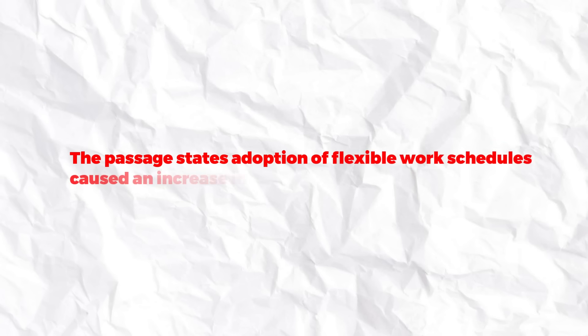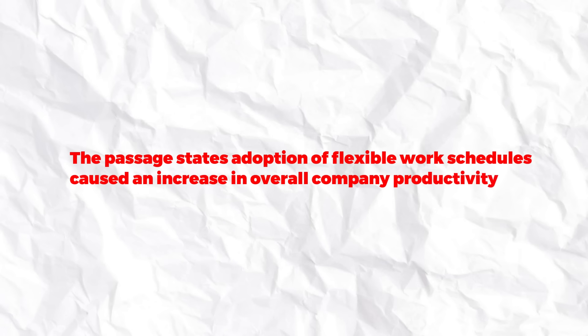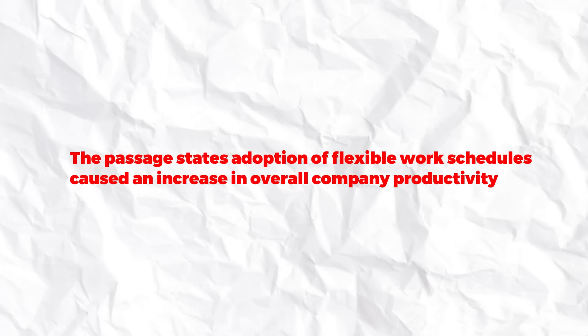One option stated: 'The passage states adoption of flexible work schedules caused an increase in overall company productivity.' The passage mentioned a flexible work schedule policy was implemented that increased employee satisfaction, confirmed by a survey. During that period, employee productivity also went up. However, there is no fact backing up that the productivity increase happened because of the flexible work schedule. Both facts are correct — the policy was implemented and productivity went up — but there is no data to prove a cause-and-effect relationship. Productivity could have gone up due to many other reasons, so linking these two facts makes the option incorrect.